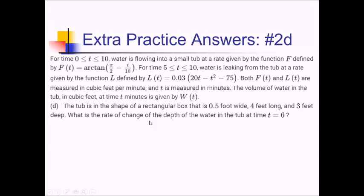For this last part, we're told the tub is a rectangular box 0.5 feet wide by 4 feet long by 3 feet deep. We want the rate of change of the depth of the water at time 6. We already have the rate of volume change; now we want the rate of depth change. This is a related rates problem requiring an equation tying volume and depth together.